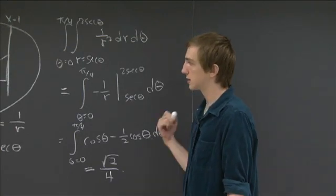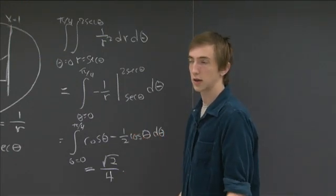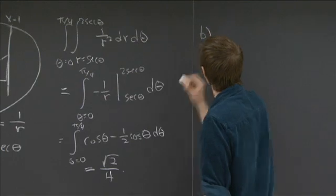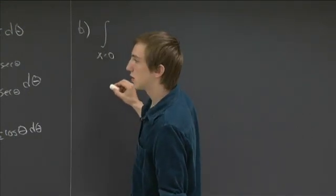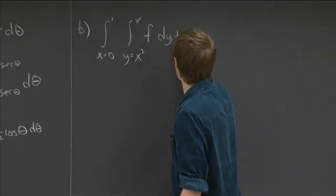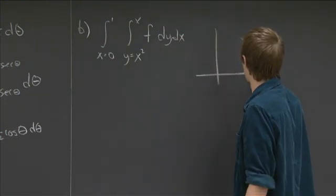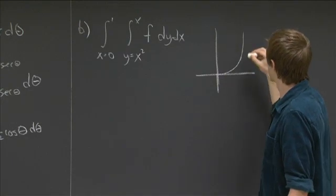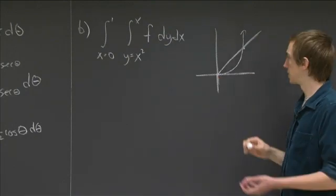Notice the difficult part is figuring out how the boundary curves of your original region re-express in r and theta coordinates. Let's get more practice with that in parts b and c. In part b, we're taking the integral from x equals 0 to 1, y from x squared to x, of f dy dx. Let's draw this region: the bottom curve is y equals x squared, the top curve is y equals x, and x runs from 0 to 1.